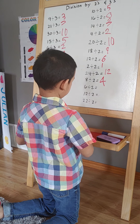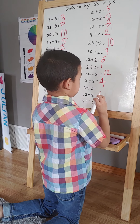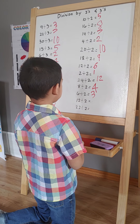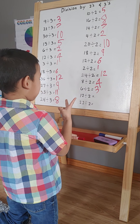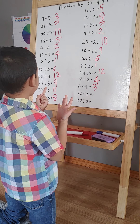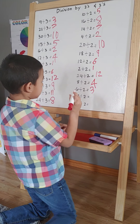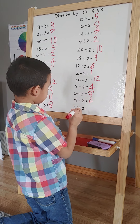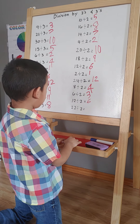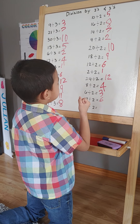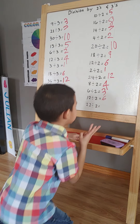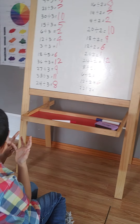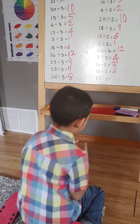6 divided by 2. 2, 4, 6. 3. 12 divided by 2. A silly maker. 2, 4, 6, 8, 10, 12. 6 again. 1, 2, 4, 5, 6, 8, 10, 12, 14, 15. Okay, last one. 16, 18, 20, 22. 11.